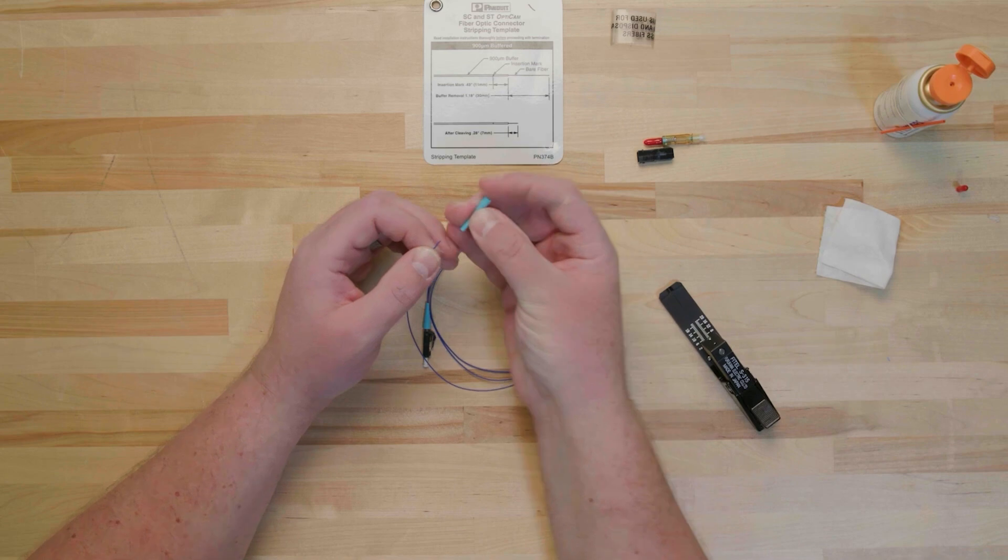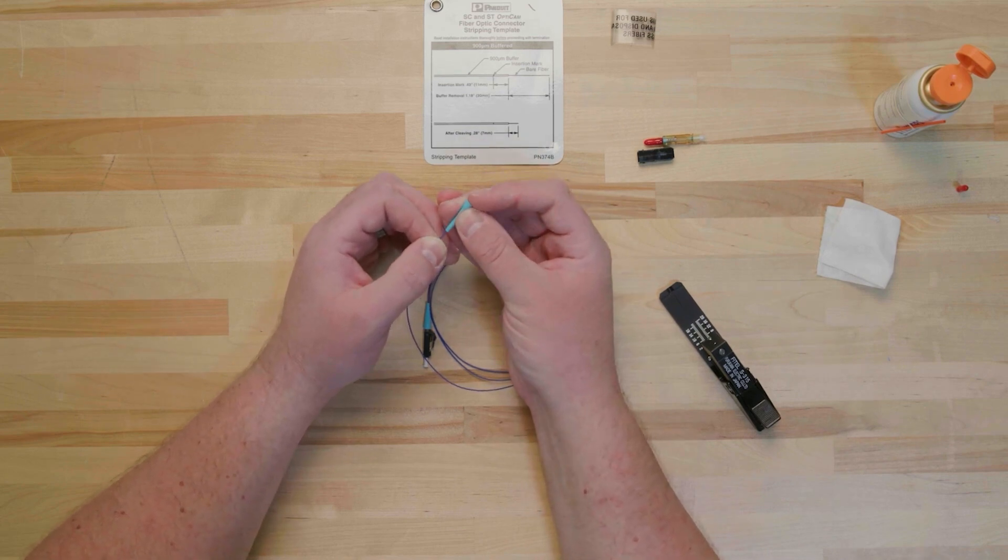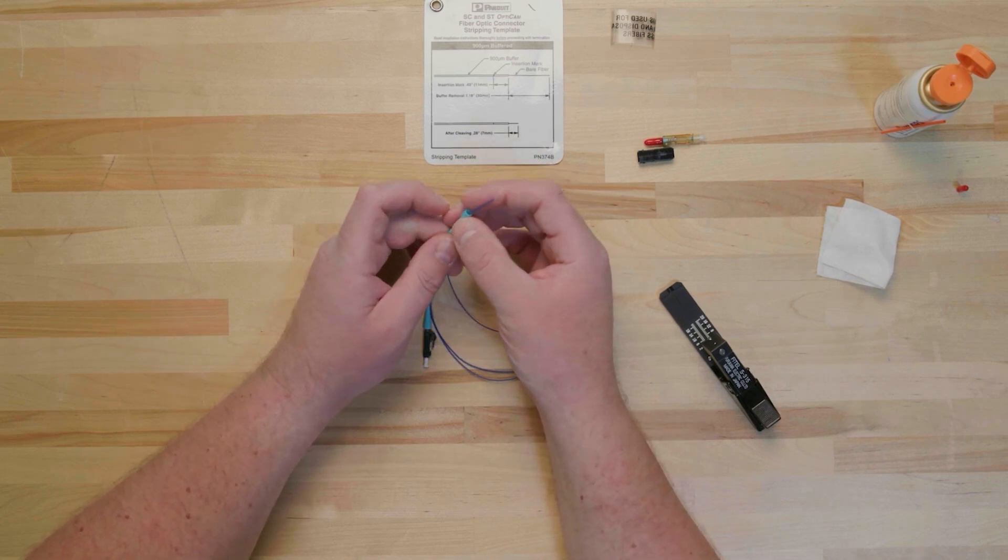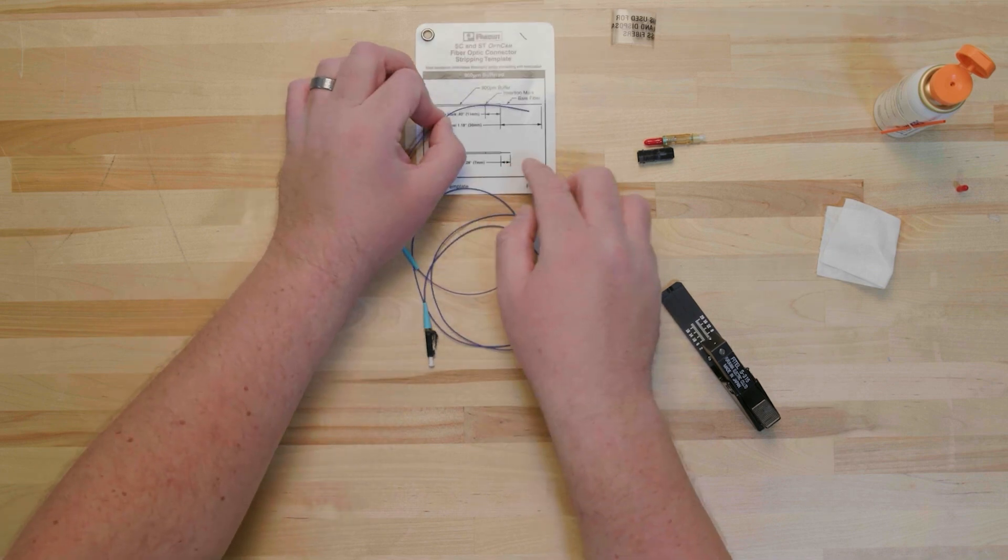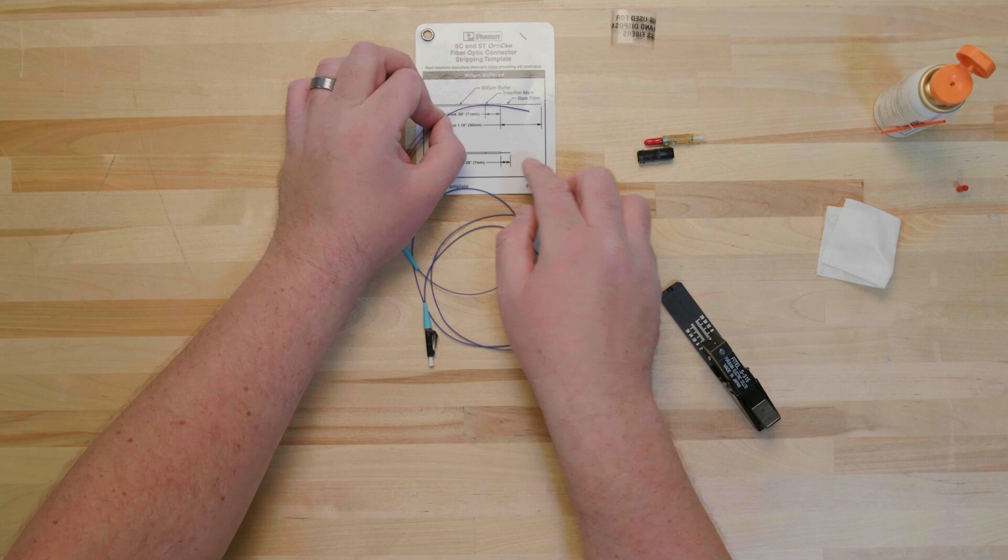Begin by inserting the fiber cable into the narrow end of the boot. Slide the boot back along the cable to keep it out of the way for now. The boot prevents the bend radius of the fiber cable from being exceeded. The boot must be installed first. You will not be able to slide the boot on once the connector has been installed.